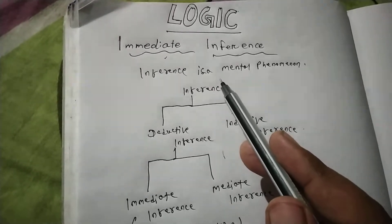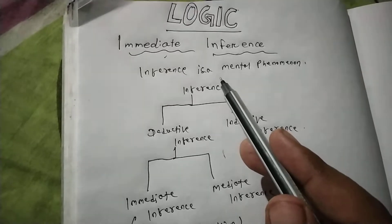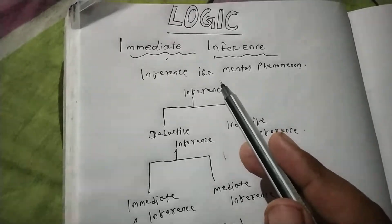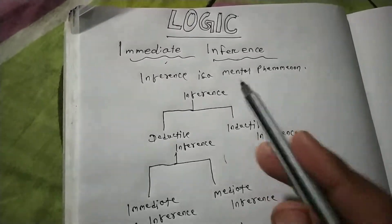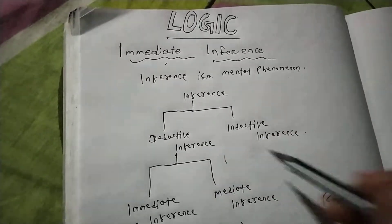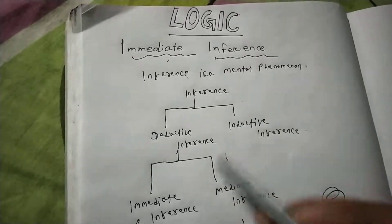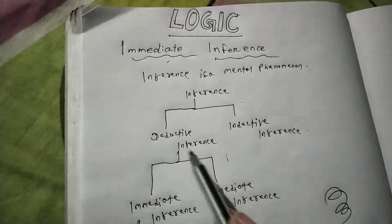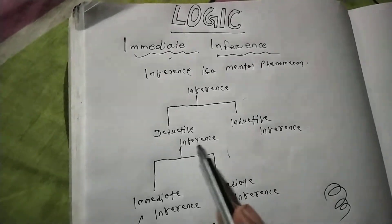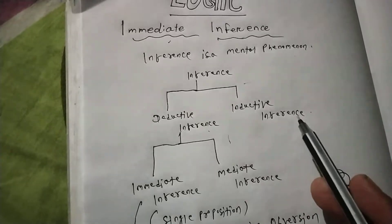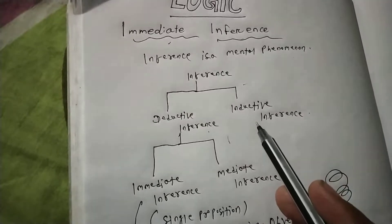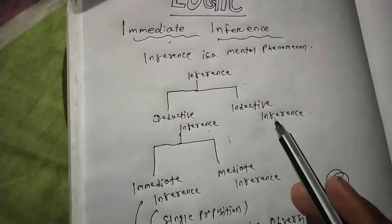This is the premise and the conclusion. Inference is of two types: deductive inference and inductive inference.